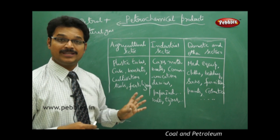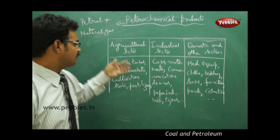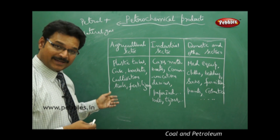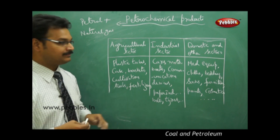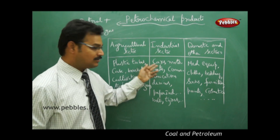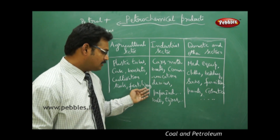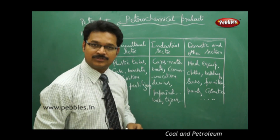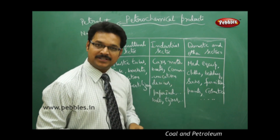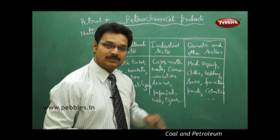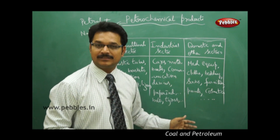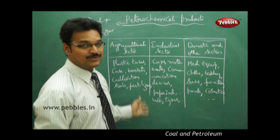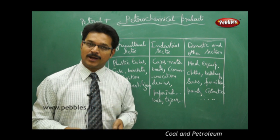Petrochemicals are used in many areas. In agriculture we use plastic tubes, cases, baskets, cultivation implements and tools, and fertilizers. In the industrial sector we use them in cars, motorboats, communication devices, paper industries, belts, and ties. In domestic purposes and other sectors — medical equipment, clothes, bedding, socks, furniture, paints, and cosmetics. Most areas use petrochemicals.